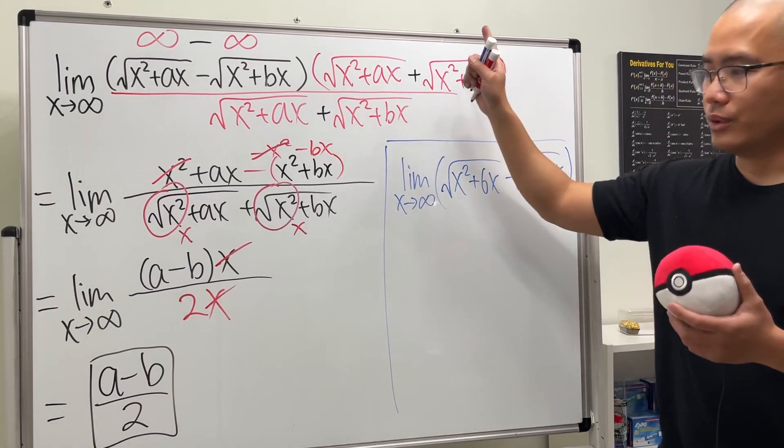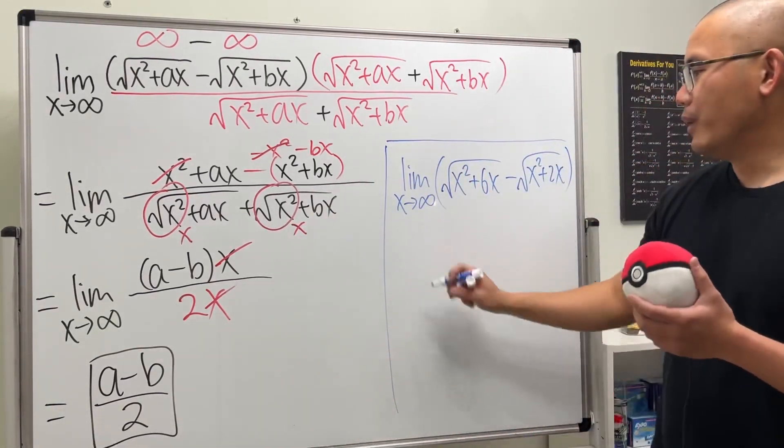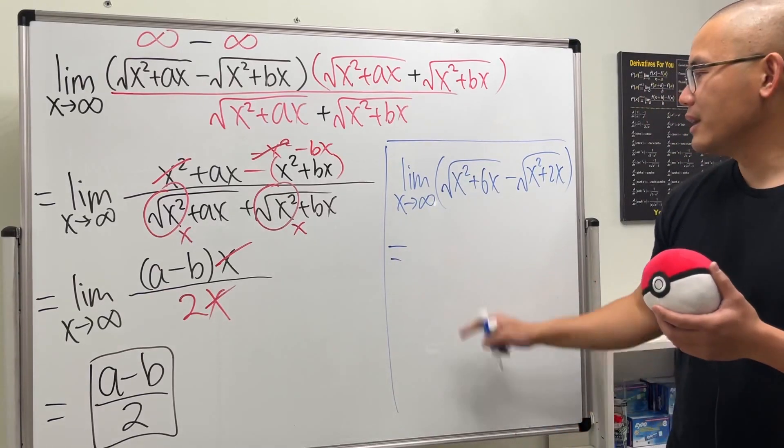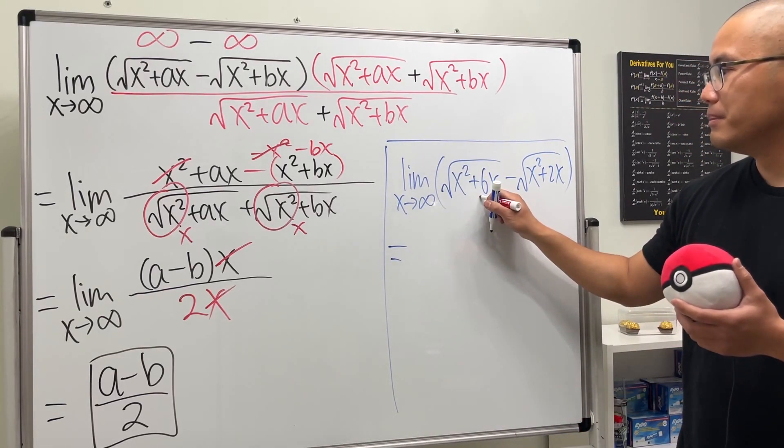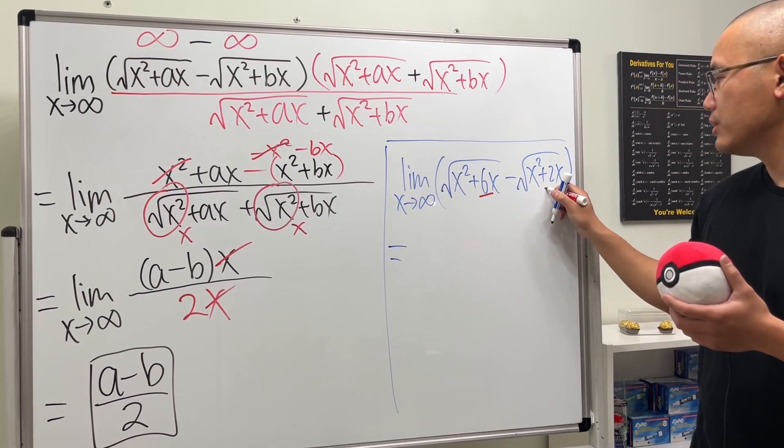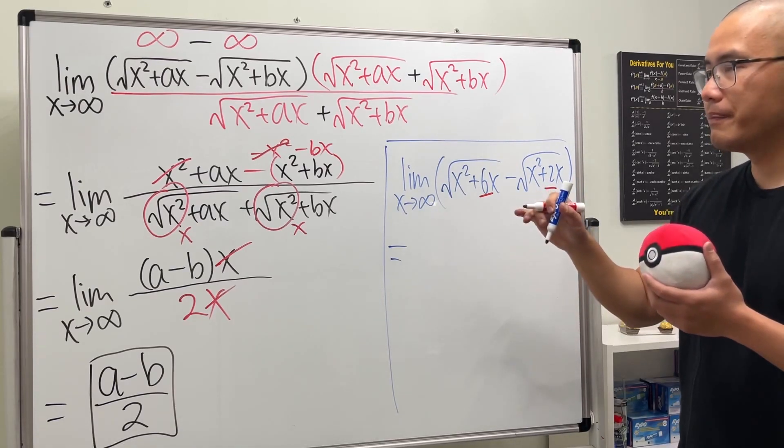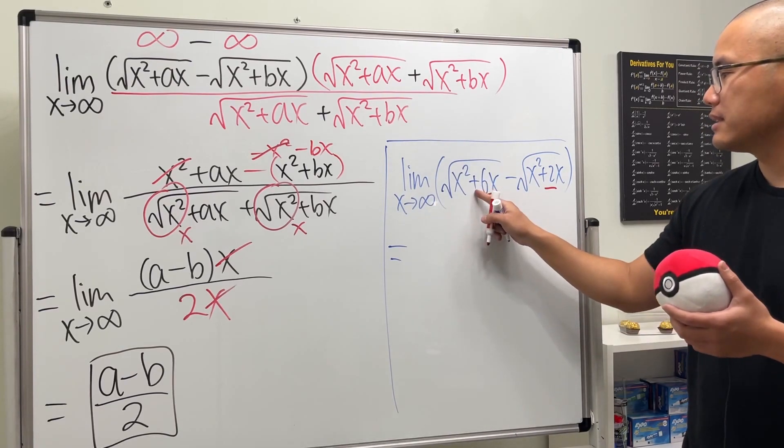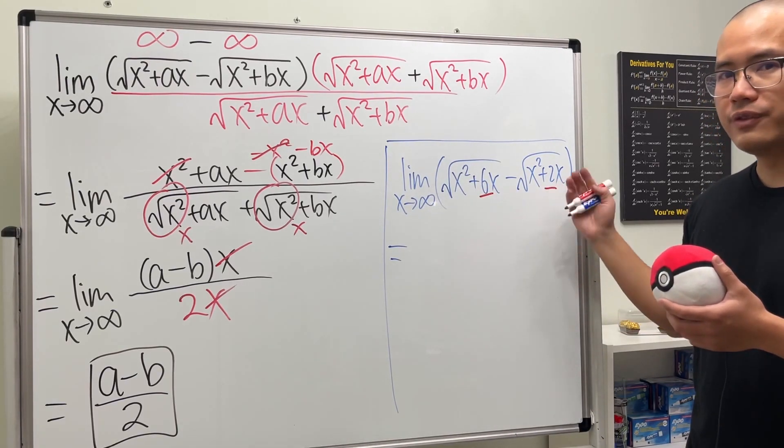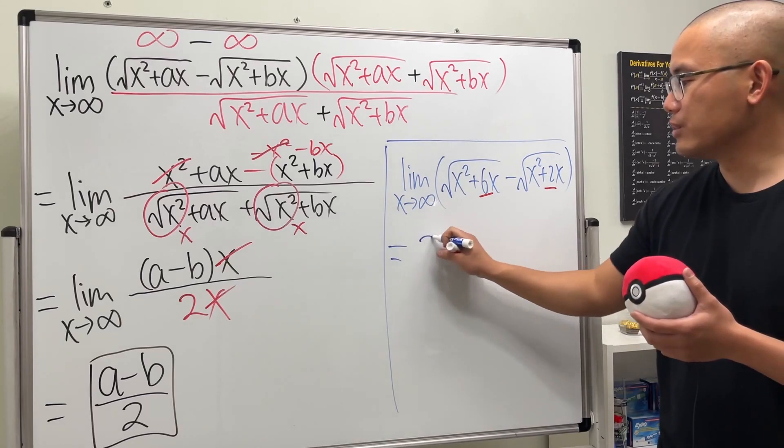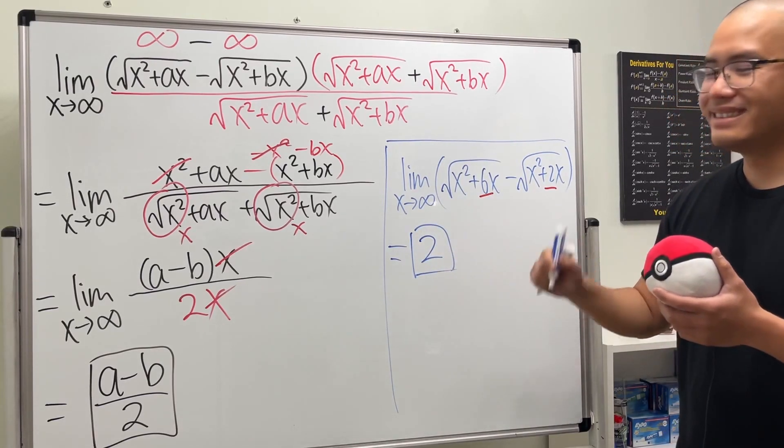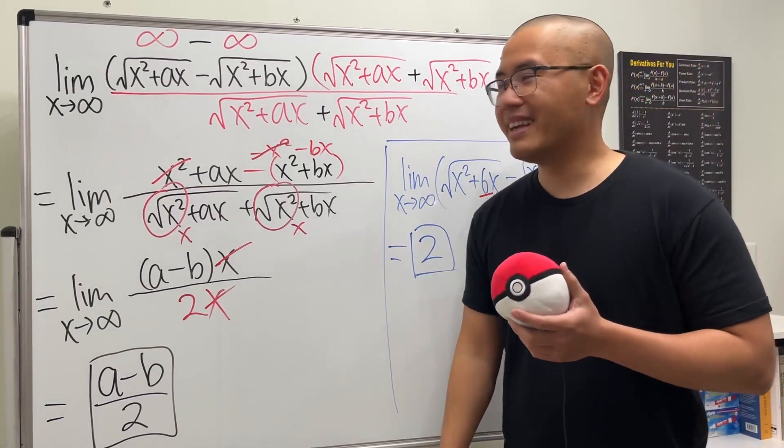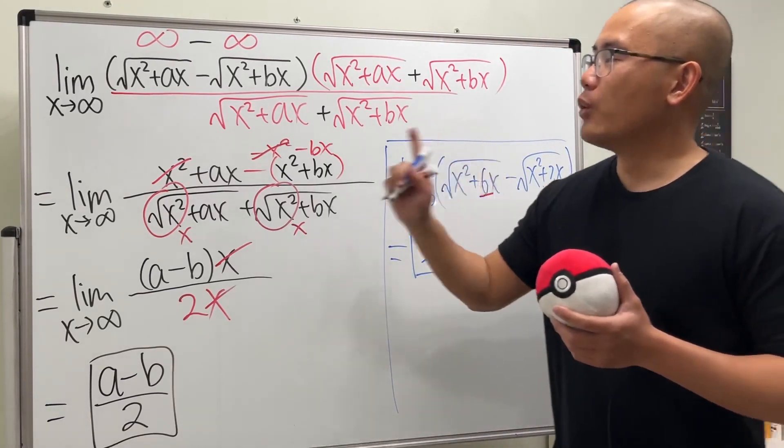Well, you can go through the same thing again, or you can just remember the formula here. Our a is 6 and then the b is 2. And by the way, a and b can be negative here, but here they are both positive. So what do we do? 6 minus 2 which is 4, and then divided by 2, so the answer is equal to 2. And we are done, really cool in my opinion.